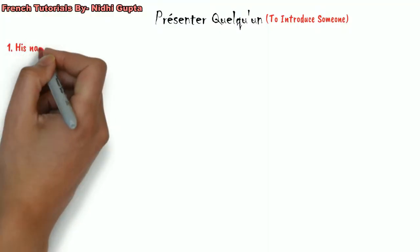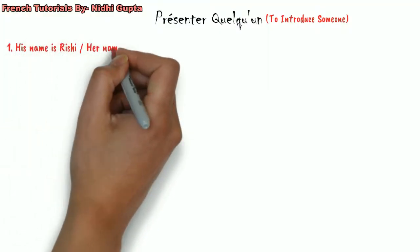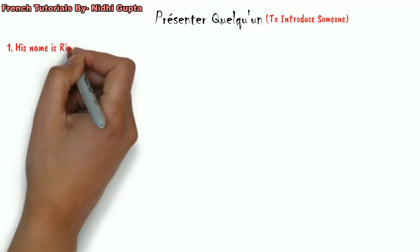The first sentence is 'his name is.' If I go to a party or meet somebody with my friend, how am I going to introduce my friend? I'll say 'this is' or 'he is' and then his name. So if my friend's name is Rishi, I would say 'his name is Rishi.'